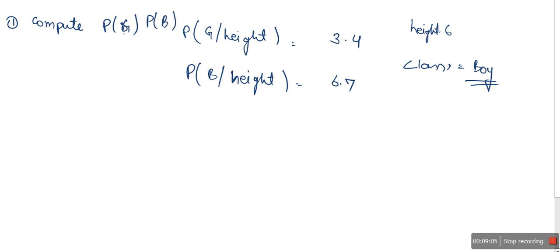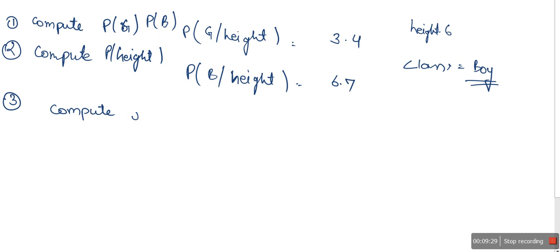So the steps are: first, compute P(girl) and P(boy) — these are just the number of class instances divided by the total number of data instances. Second, compute P(height). Third, compute mu and sigma for each class — take data belonging to a particular class, compute the average and standard deviation. Then plug these values into the Gaussian distribution probability function, compute the probabilities, and finally use all these values to classify.